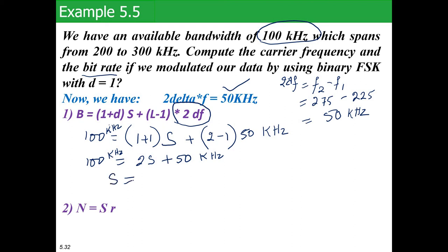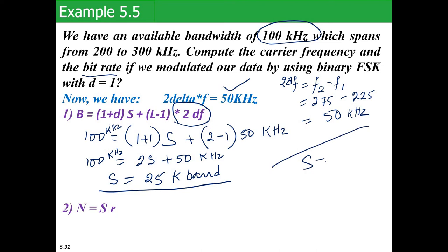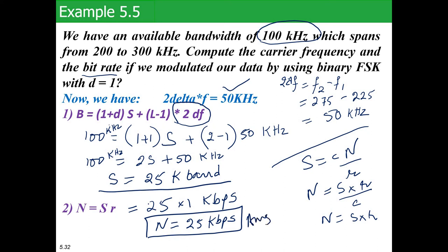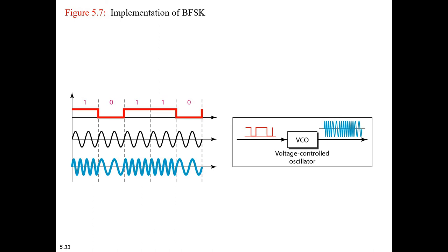Solving for s: s equals 25 kilobaud, which is the baud rate. We already know that s equals c × n / r. Rearranging, n equals s × r / c. Since c equals 1, n equals s × r. Substituting: n equals 25 kbaud × 1, so the bit rate equals 25 kbps. This is your answer. Now let us see the implementation of binary FSK.